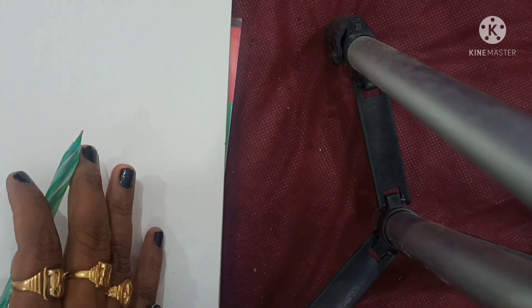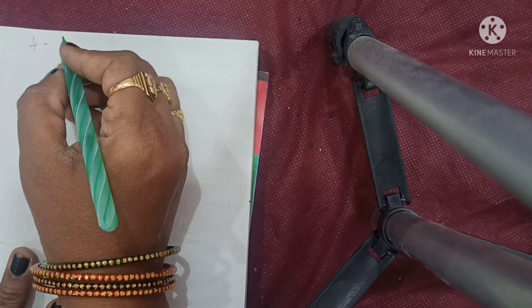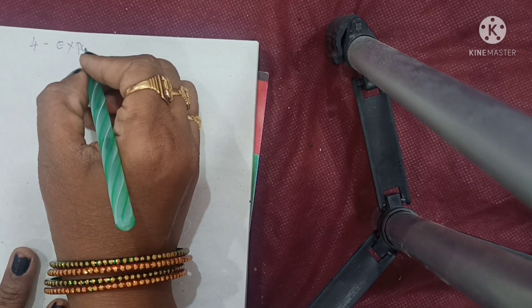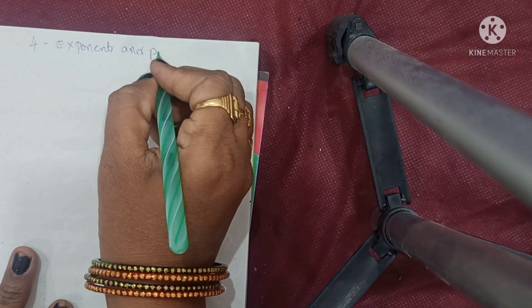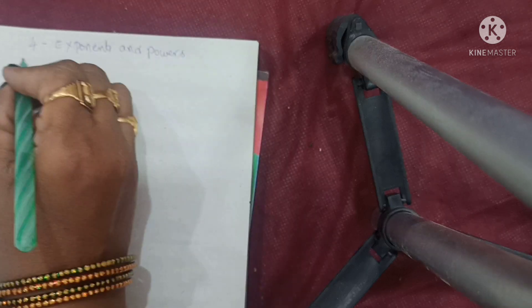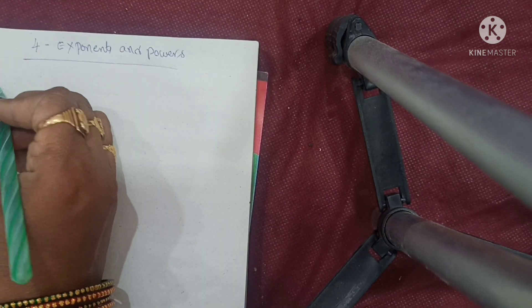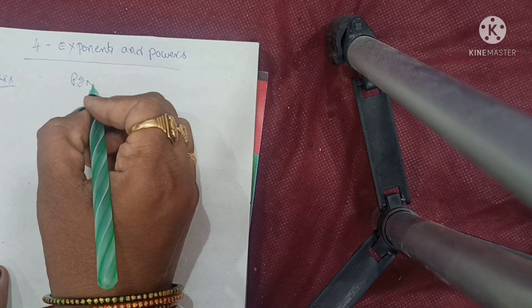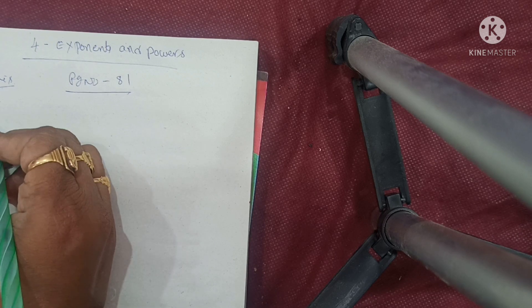Today's topic is the fourth unit, fourth chapter: Exponents and Powers. This is available on page number 81, first exercise.